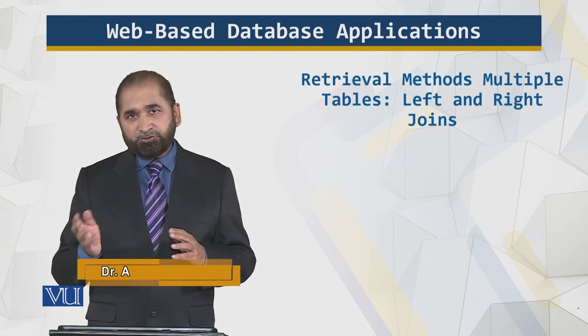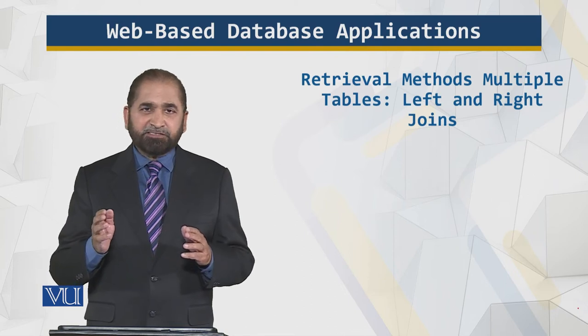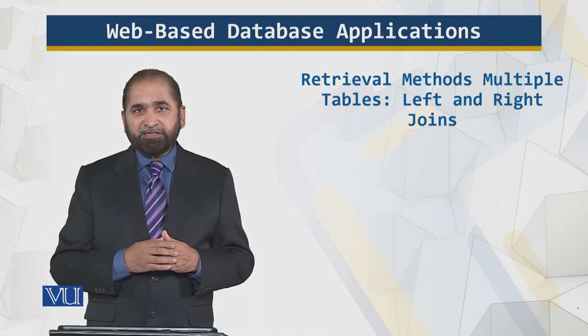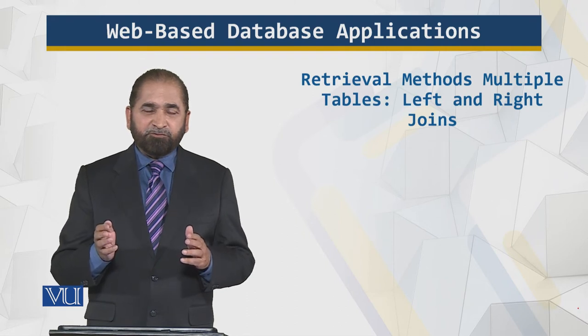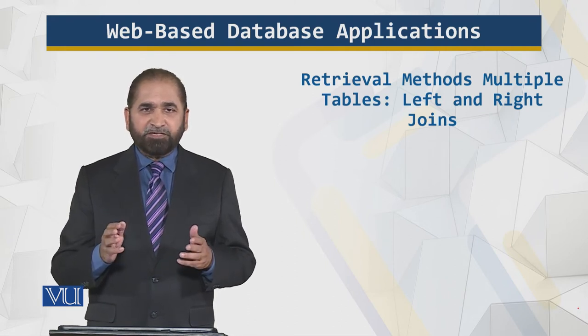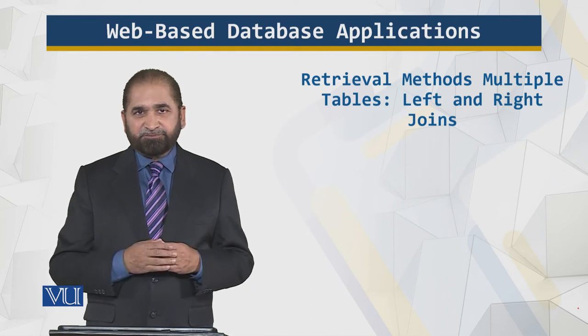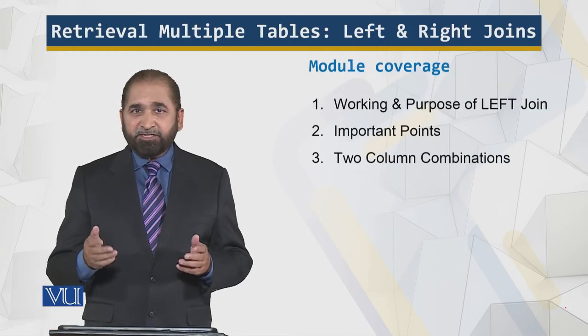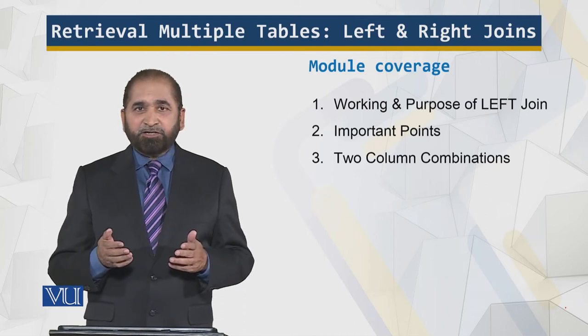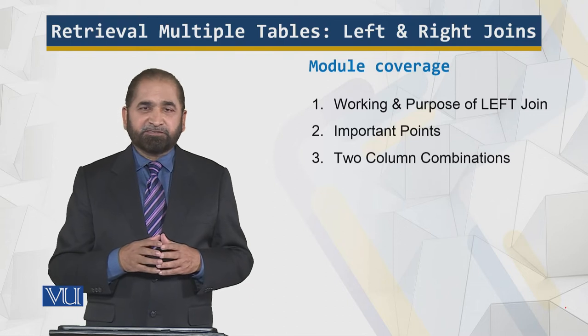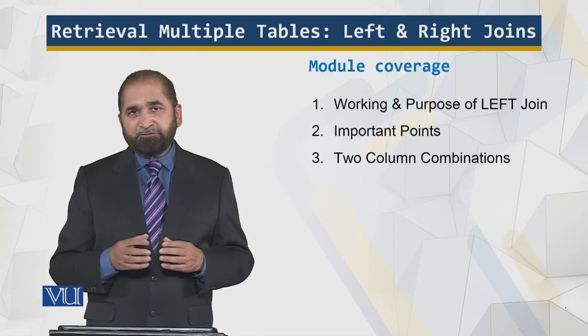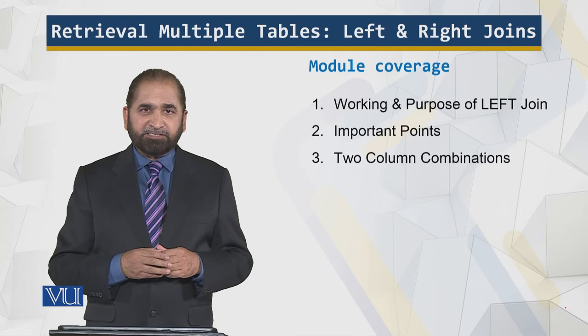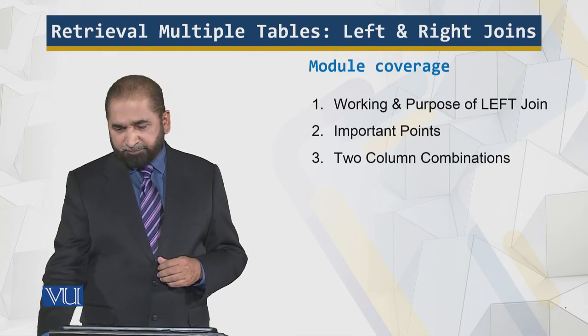Left, right joins. Now remember that the right join is just the side of the query is reversed. So whatever we discuss in the left join is applicable to the right join when the side of the query is reversed. You will understand this when you look at the notes. So let's briefly look at the module outline. What is the working and purpose of the left join? What are the important points and two column combinations? This example is based upon a scenario which I will also briefly discuss in this module.